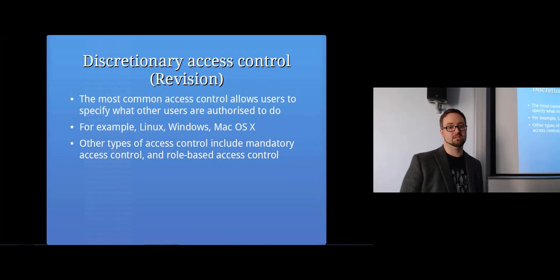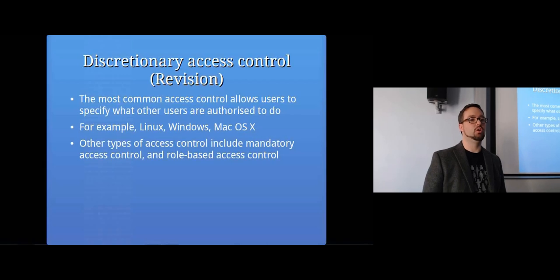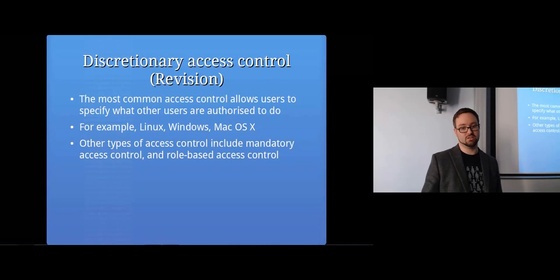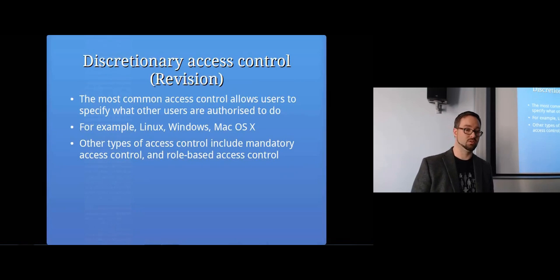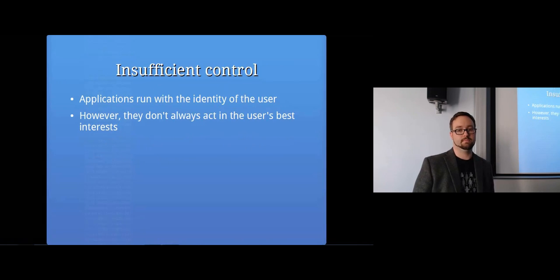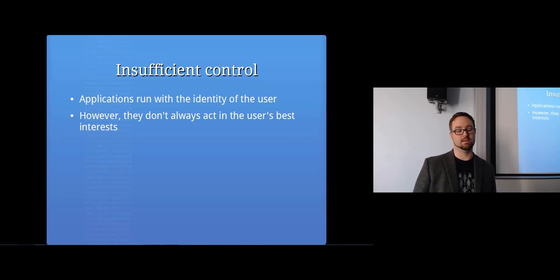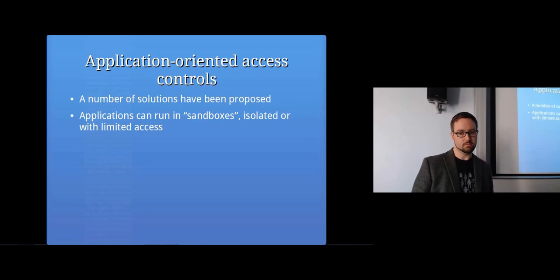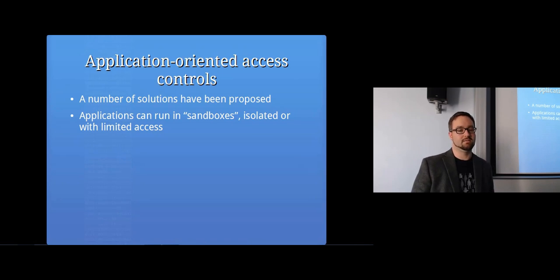With DAC, users get to control what other users are allowed to do on a system — any resources you own, you can specify who else can access them. Other types include mandatory access control and role-based access controls. But the problem is there's an insufficient level of protection against programs that are running with the identity of a user but aren't always acting in the user's best interest. There have been a number of solutions proposed to this problem, and that's what we're going to talk about.